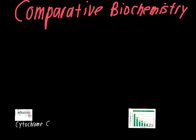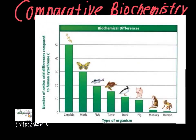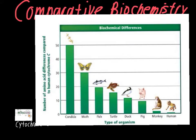Looking at a graph of the biochemical differences between organisms in the amino acid profile of their cytochrome C: the x-axis breaks it down into different types of organisms, and the y-axis shows the number of amino acid differences compared to human cytochrome C. There is a small variation on the human side, meaning there are some differences between different groups of people. Monkeys have a little bit of variation compared to us, but a low number of differences shows they are closely related to us evolutionarily.